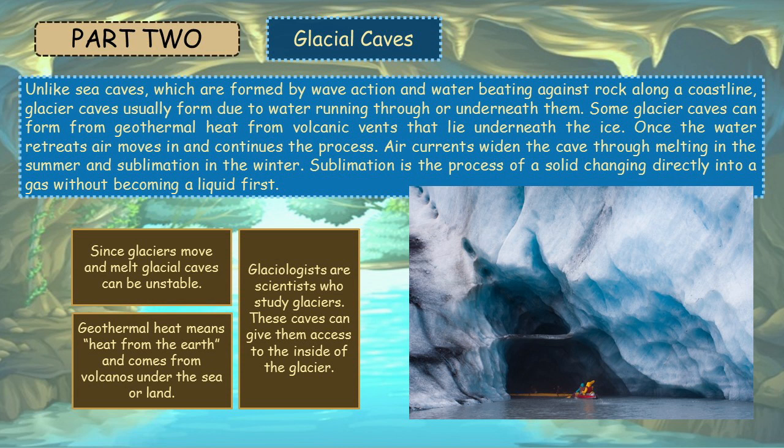Some glacier caves can form from the geothermal heat from volcanic vents that lie underneath the ice. Once the water retreats, air moves in and continues the process. Air currents widen the cave through melting in the summer and sublimation in the winter. Sublimation is the process of a solid changing directly into a gas without becoming a liquid first. Since glaciers move and melt, glacial caves can be unstable. Geothermal heat means heat from the earth and comes from volcanoes under the sea or land. Glaciologists are scientists who study glaciers, and these caves can give them access to the inside of the glacier.